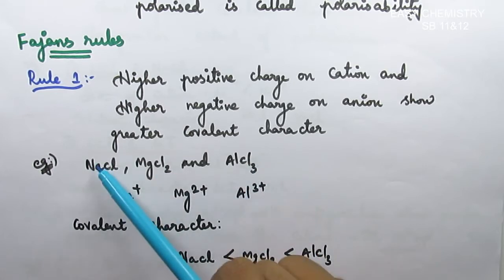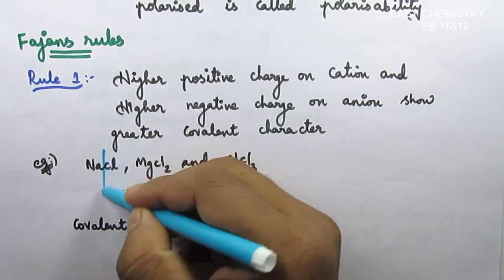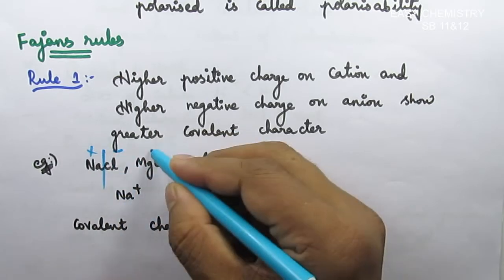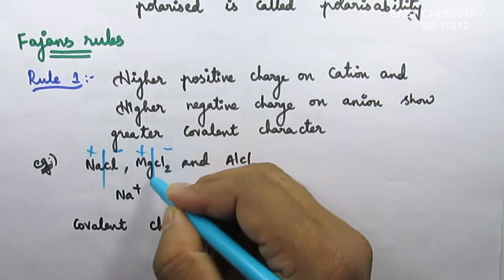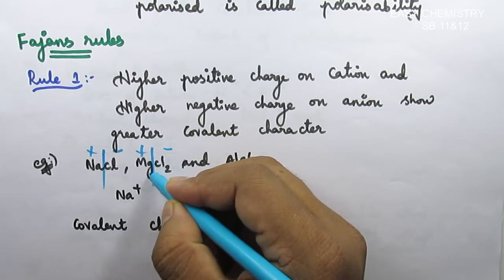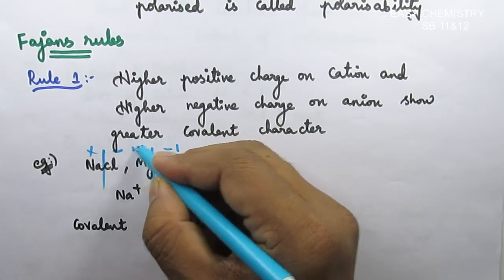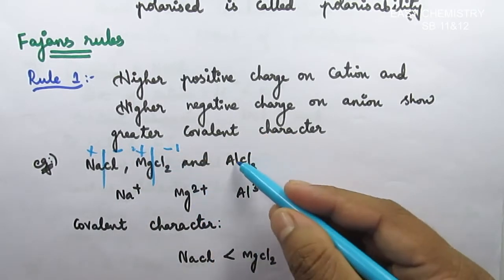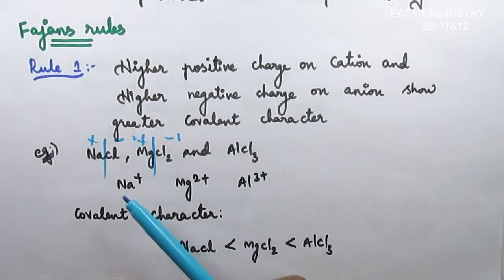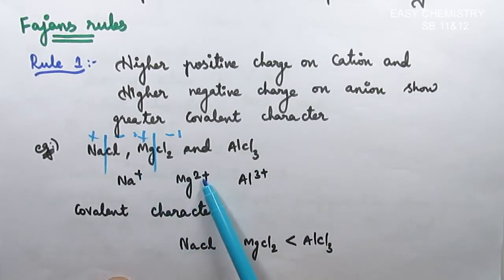In these compounds, Na is +1, Mg is +2, and Al is +3. The positive charges are +1, +2, and +3. As the positive charge on the cation increases from Na⁺ to Mg²⁺ to Al³⁺, the covalent character increases. This is Fajans' Rule 1: greater positive charge on the cation means greater covalent character.